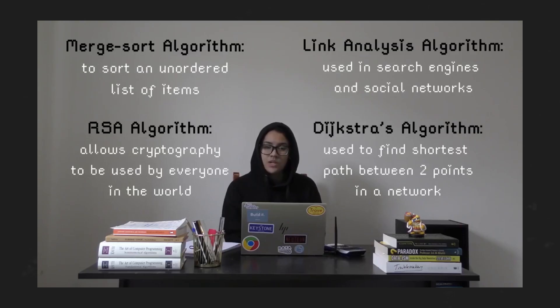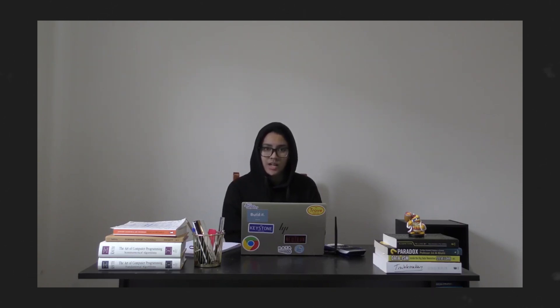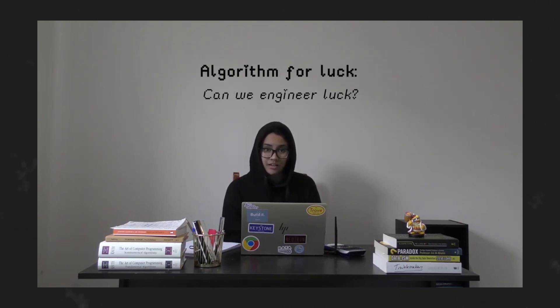Hey guys, my name is Aisha, and I was a global finalist in the Breakthrough Junior Challenge 2019 for my mathematics video on the P vs. NP problem, and a semi-finalist in 2017 for my physics video on string theory. The core question I explored was: is there a way to create an algorithm for something more abstract, like luck? That question is the core of the P vs. NP problem.